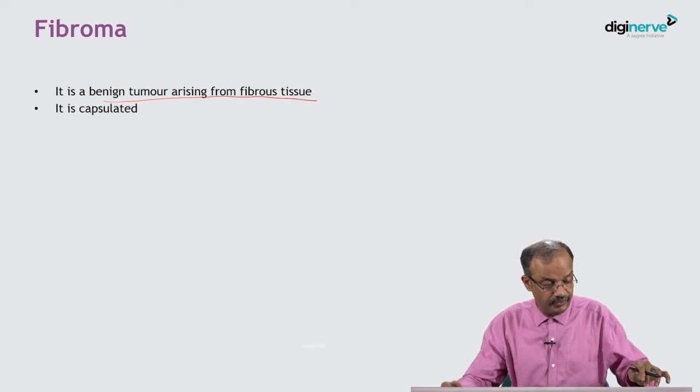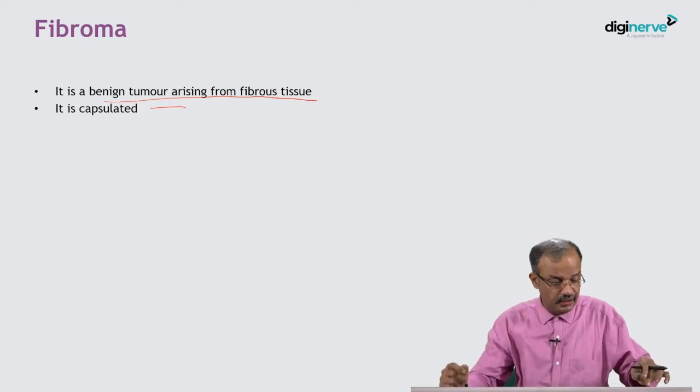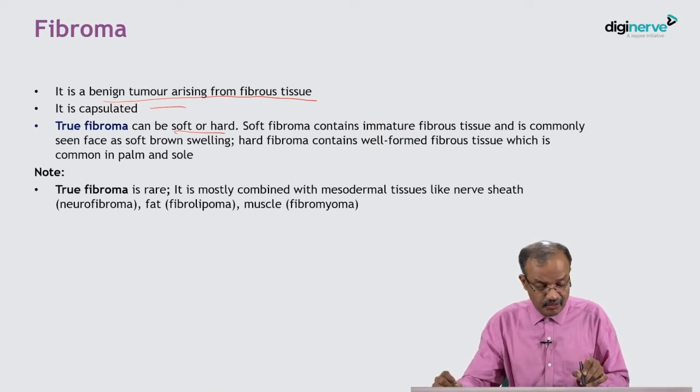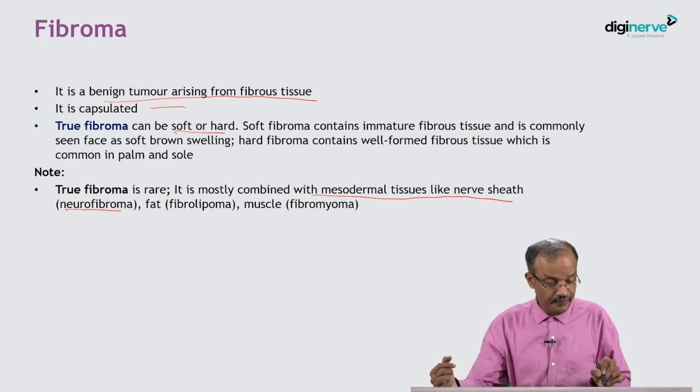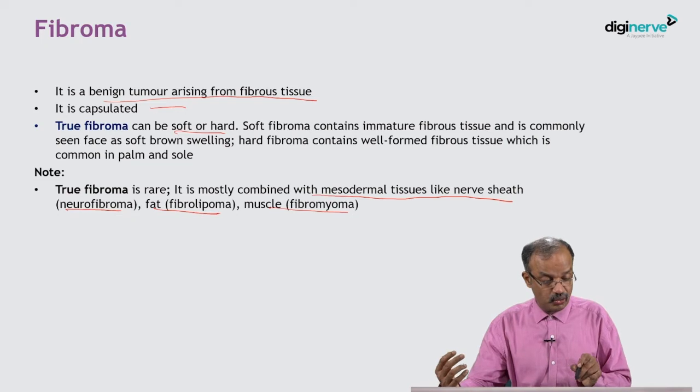Neural and fibrous combination is called neurofibroma. You have to know what fibroma is before discussing neurofibroma. Fibroma is a benign tumor arising from fibrous tissue. It is encapsulated, well-localized, and may be soft or hard. If the fibrous tissue is immature, it is soft; if mature, it is hard. It is common in the palm and sole. True fibroma is rare and is usually associated with other mesodermal tissues — such as nerve sheath (neurofibroma), fat (fibrolipoma), and muscle (fibromyoma).